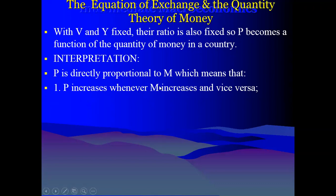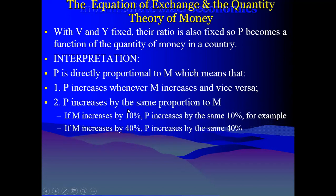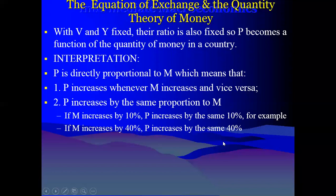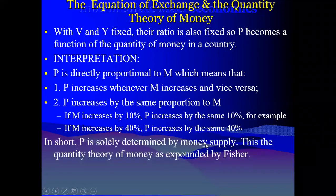When money supply increases, price will also increase. If money supply should decrease, then price should also decrease. Based on the proportionality, if money supply increases by 10%, then price should increase by the same 10%. If money supply increases by 40%, then price should also increase by 40%. So that is the proportionality component. In short, P is solely determined by money supply.